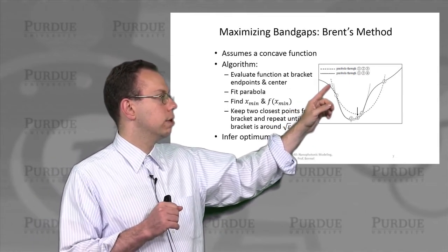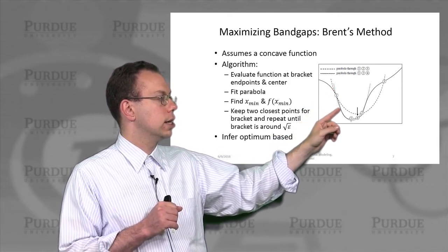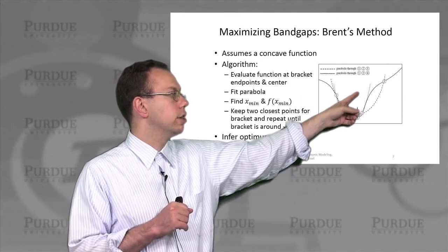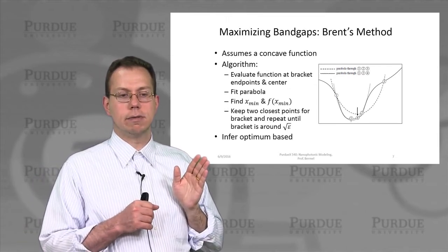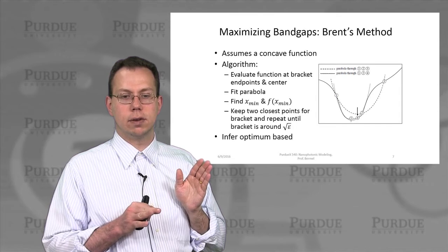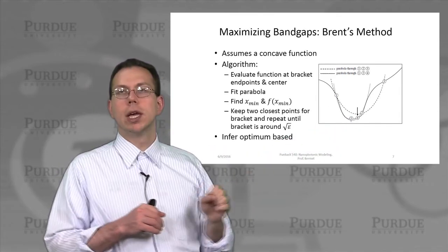So you would create an initial bracket between two points, and you would assume that you have a concave function between them. And you would basically fit a parabola at the initial set of points that you calculate, and then try to evaluate it right at the center. And then, of course, it probably doesn't exactly conform to a parabola.